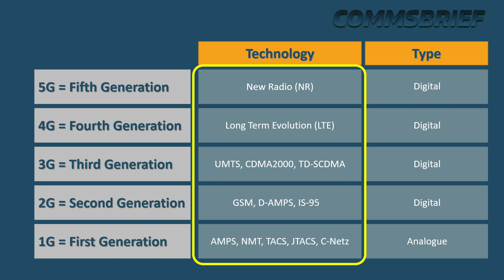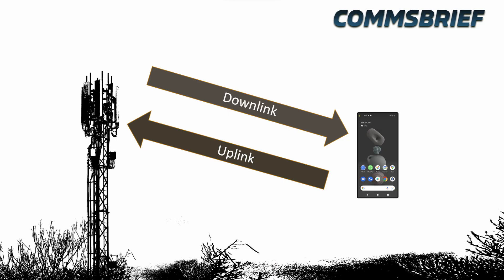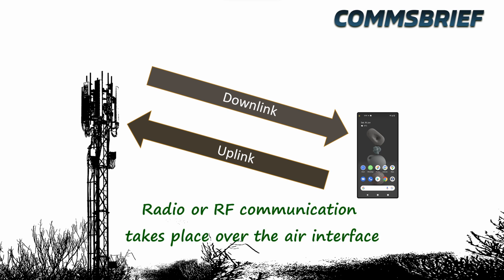To understand that, let's have a look at the basic concept of communication between a phone and a cell tower. As you know, the communication between a mobile phone and a cell tower is wireless, meaning all communication takes place over the air — the fresh air that you breathe. This air in telecoms is also called the air interface. So let's just focus on the air interface now.